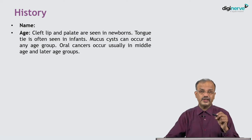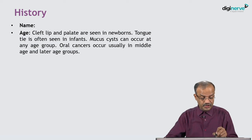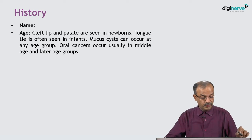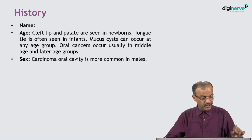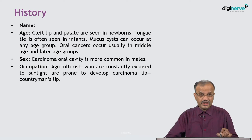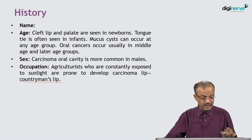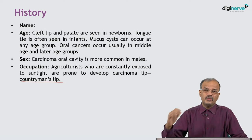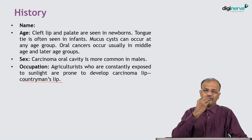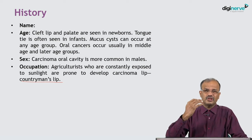I will show a photo so you will have an idea of what tongue tie means. Mucoceles can occur at any age group. Oral cancers usually occur in middle age and later, and carcinoma of the oral cavity is more common in males. Agriculturalists who are constantly exposed to sunlight are more prone to develop carcinoma of the lip, otherwise called the countryman's lip, where squamous cell carcinoma occurs in the lower lip — though it can also occur in the upper lip. In the upper lip, minor salivary gland tumours are much more common.